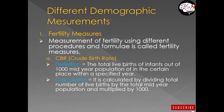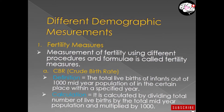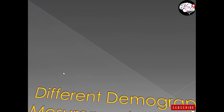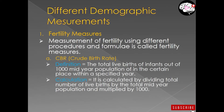Now let's discuss CBR. While discussing CBR, we will cover six topics: first is definition, second is calculation, third is expression, fourth is features, fifth is important data, and sixth is formula. So let's start with the definition — what is CBR, what is crude birth rate?